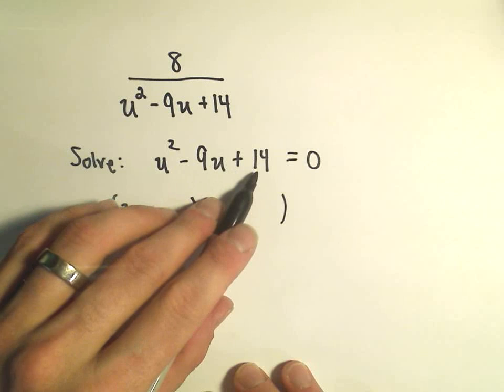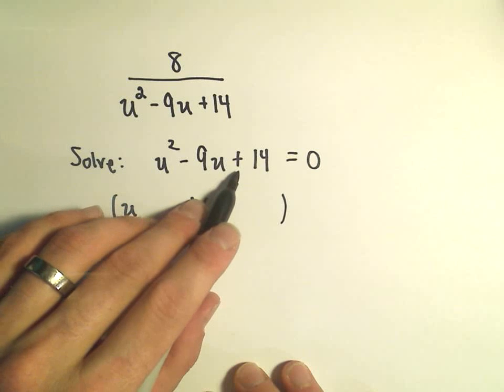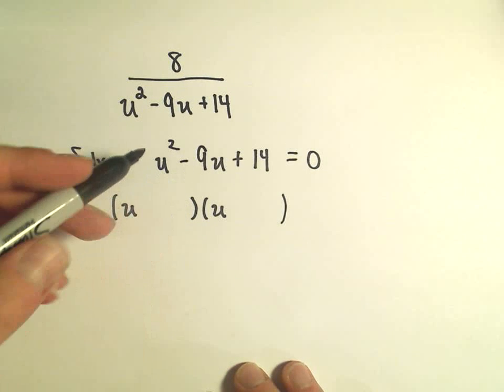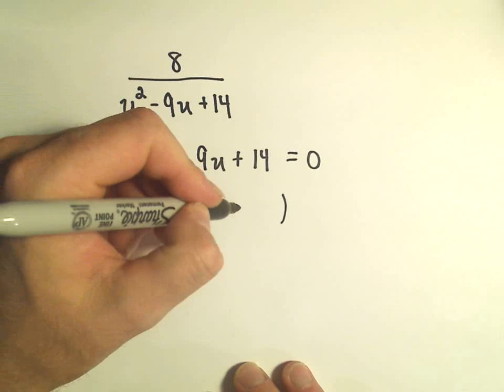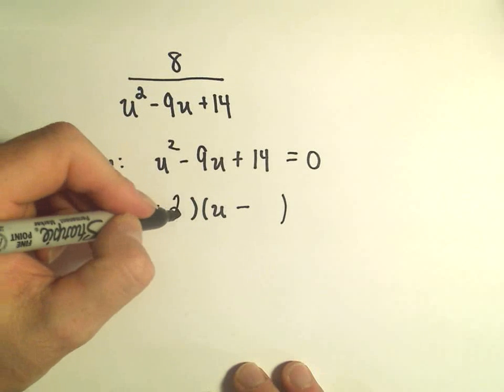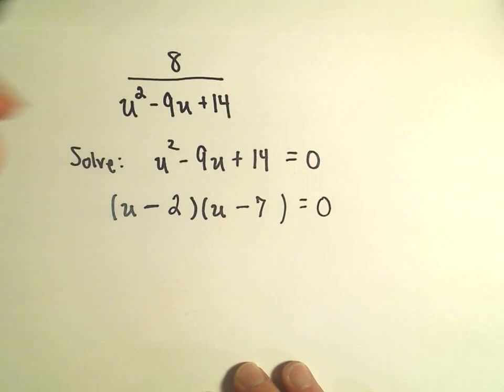Well, since they have to multiply to a positive number, they either have to both be positive or both be negative. But since they have to add up to a negative number, they'll both have to be negative. And I think if we use 2 and 7, that'll do it for us.